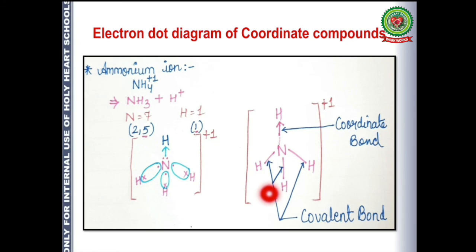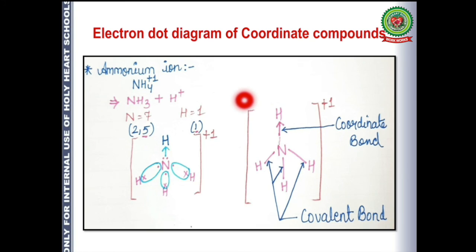The other bonds in ammonium ion are covalent. After sharing the lone pair of electrons, there is no lone pair of electrons left in ammonium ion — remember this. In the case of hydronium ion, one lone pair still remains after sharing, but in the case of ammonium ion, we don't have any lone pair remaining.